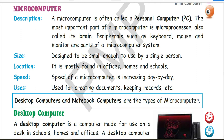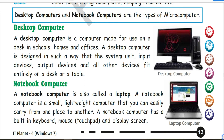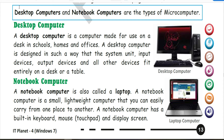Micro computer is also called a personal computer. The most important part of the micro computer is the microprocessor, and it is also called the brain. Some peripheral parts of the computer include keyboard, mouse and monitor. It is basically used for creating documents and keeping records. Desktop computer and notebook computer are types of micro computers.